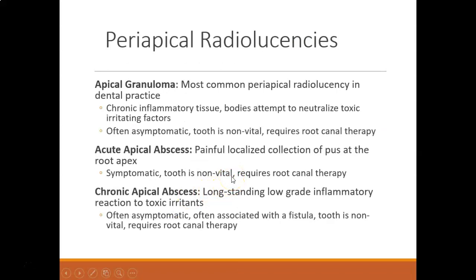There are a couple different types of radiolucencies. Apical granulomas are the most common periapical radiolucency in a dental practice. They're due to chronic inflammatory tissue — it's the body's attempt to neutralize the toxic irritating factor. They're often asymptomatic, the tooth is non-vital, and it requires root canal therapy.